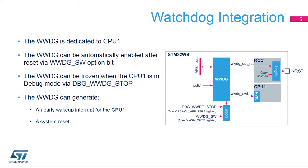It is possible to select the hardware or software start via an option byte. In hardware mode, the WWDG can be automatically enabled after reset. The window watchdog is frozen when the system is in stop, standby, or shutdown mode, but can remain active when CPU-1 is in C-sleep mode.